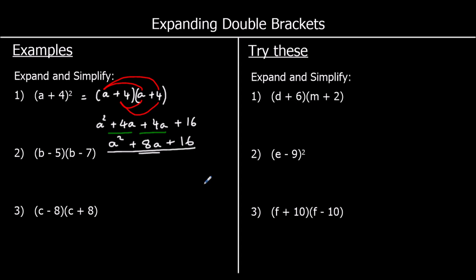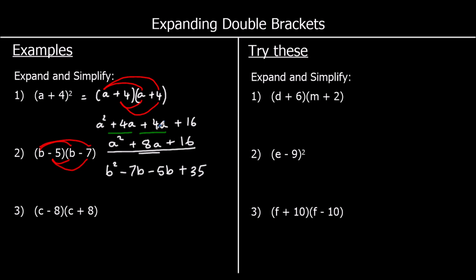For the second one, we're going to follow the same steps. b times b is b squared. b times a negative 7 is negative 7b. A negative 5 times b is negative 5b. And a negative 5 times a negative 7 — a negative times a negative is a positive, and 5 times 7 is 35. Now we collect like terms: negative 7 minus 5 goes to negative 12. So we've got b squared minus 12b plus 35.